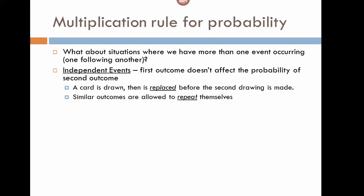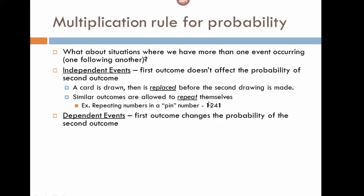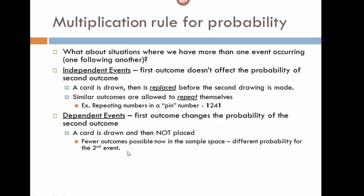We say two events, or two trials, are dependent if the first trial changes the probability of the second trial. This would be the case if we draw a card from a deck and do not replace it after picking it. Now that we've withdrawn one card, there are fewer outcomes possible in our sample space, and that changes the probability. So we have a different probability for the second event.